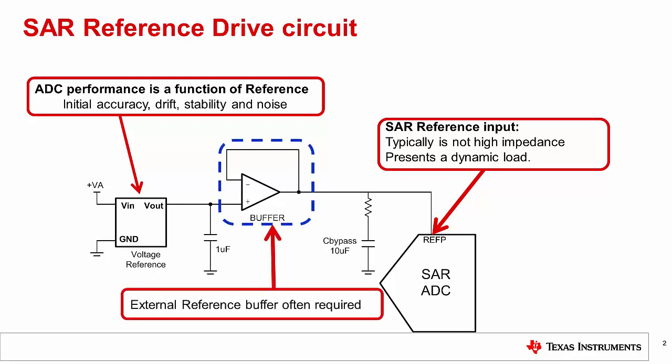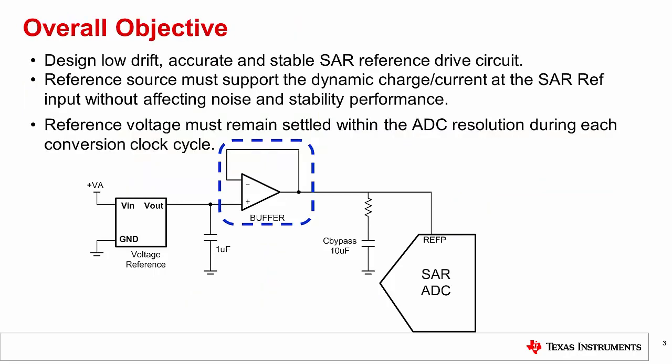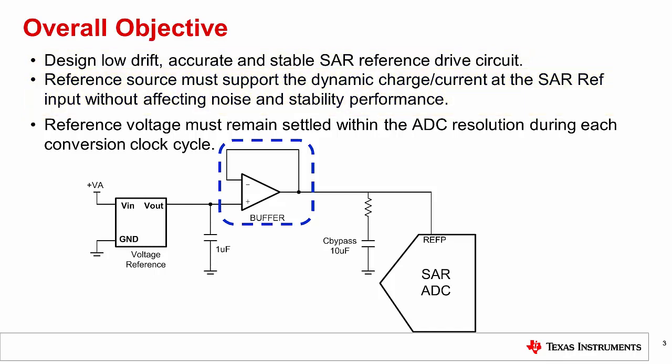In many cases, a reference buffer may be required to cope with the dynamic current demand at the SAR reference input. The reference drive circuit to the ADC must provide a low drift, very accurate DC voltage, and support the dynamic charge requirements without affecting noise and stability performance. An overview of key voltage reference specifications will be provided, as well as a detailed explanation of the SAR reference input pin behavior.